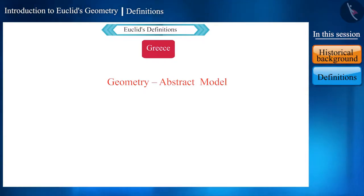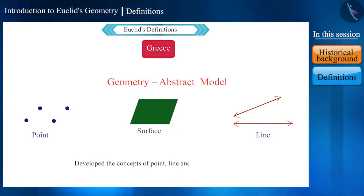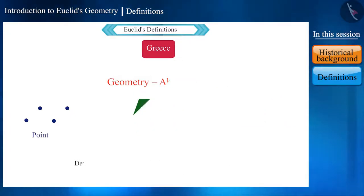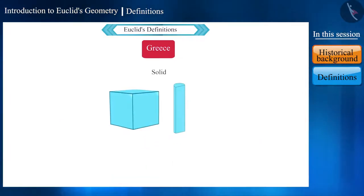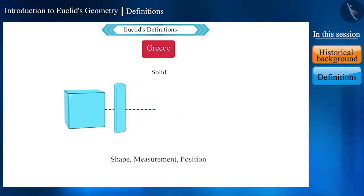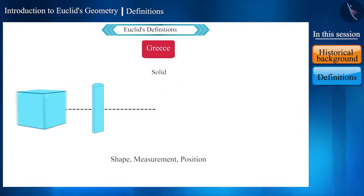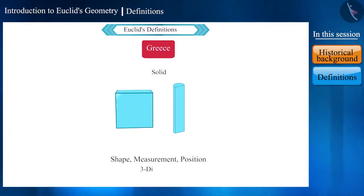All the Greek mathematicians of that time considered geometry as the abstract model of the world in which they lived. By looking at things around them, they developed the concepts of point, line, and plane, that is surface. They also developed some concepts from the study of solid objects.